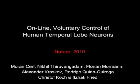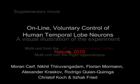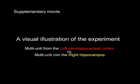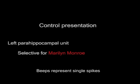My name is Carl Zimmer and this movie is going to show you how to use Marilyn Monroe to control a computer. We're going to listen to neurons that are sensitive mainly to Marilyn Monroe. You're actually going to hear the sound of the neurons themselves responding to images.